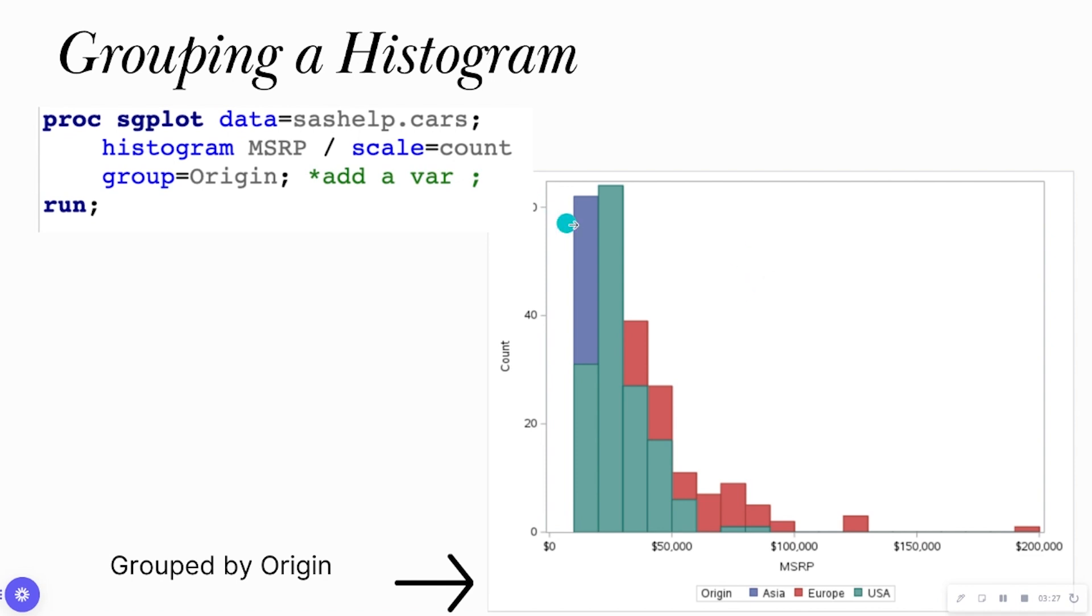I can also group a histogram by adding another categorical variable with the group option. So in this case, I have two options now. One is going to change the Y-axis to frequency. The other one is going to change the colors based off of a categorical variable. So in this case, Asia is denoted by blue, Europe is red, and the United States is green. So I can see that this outlier here is a European car. It is denoted by red.